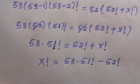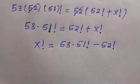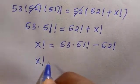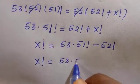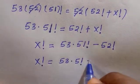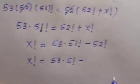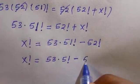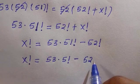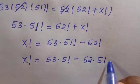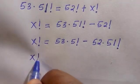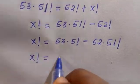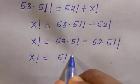We have x factorial equals 53 times 51 factorial minus 52 times 51 factorial. 51 factorial is common, so you can factor it out, and we have 51 factorial times the quantity 53 minus 52.